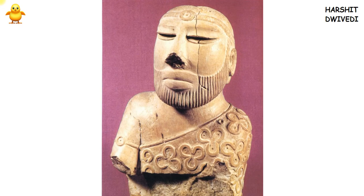The statue of a bearded priest has also been found from Mohenjo-daro. The priest has a shawl-like garment on his shoulder — his left shoulder is covered with the shawl but his right shoulder is bare. This may represent the fashion or way of wearing a shawl among priests at that time.